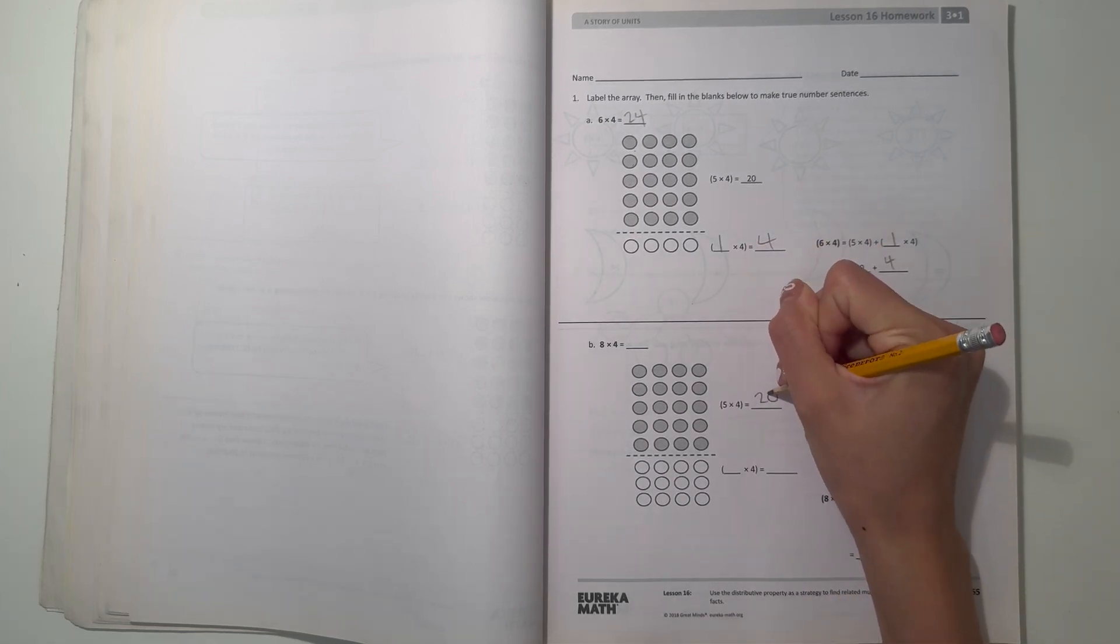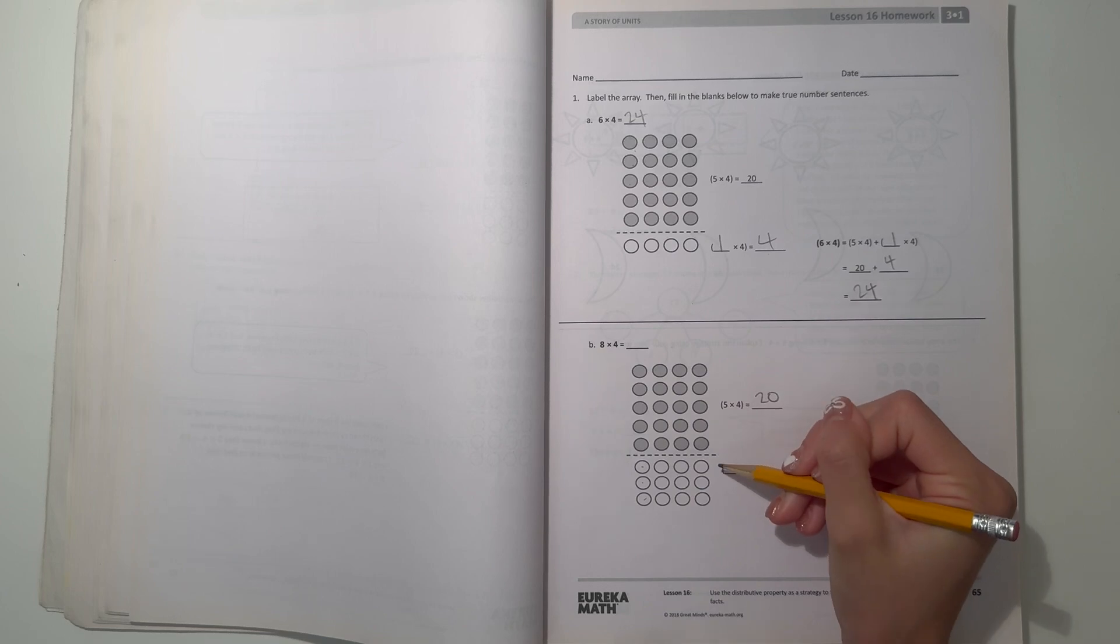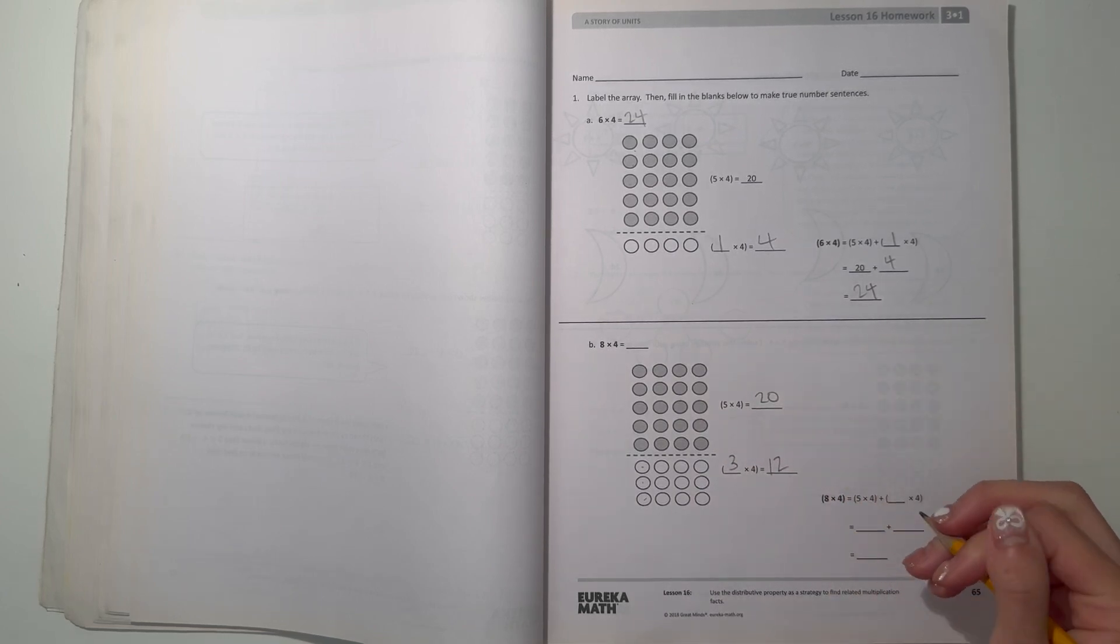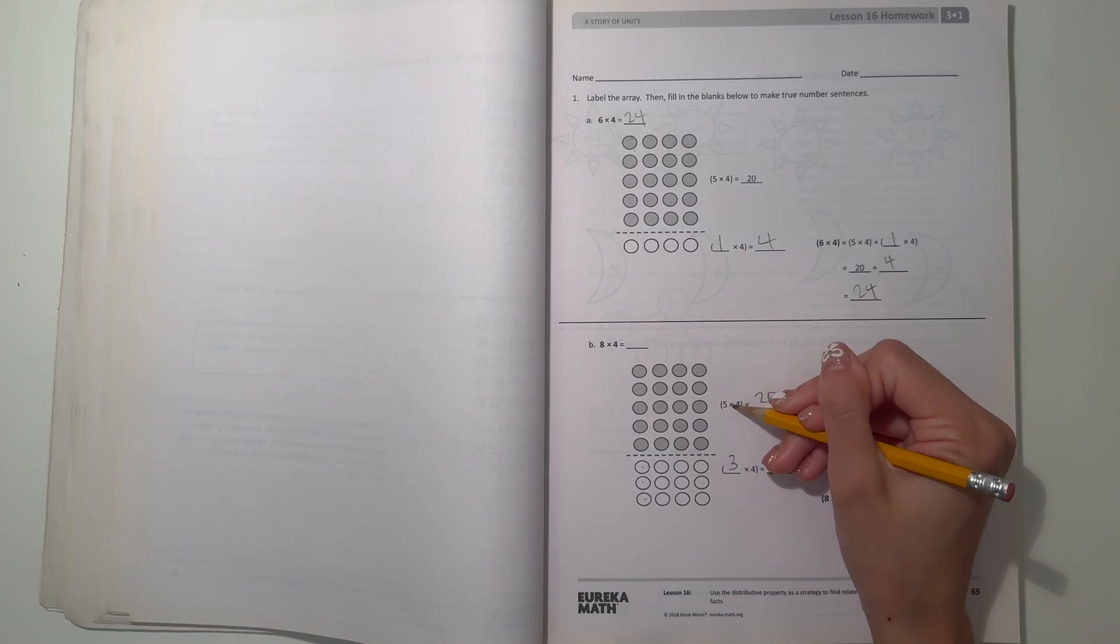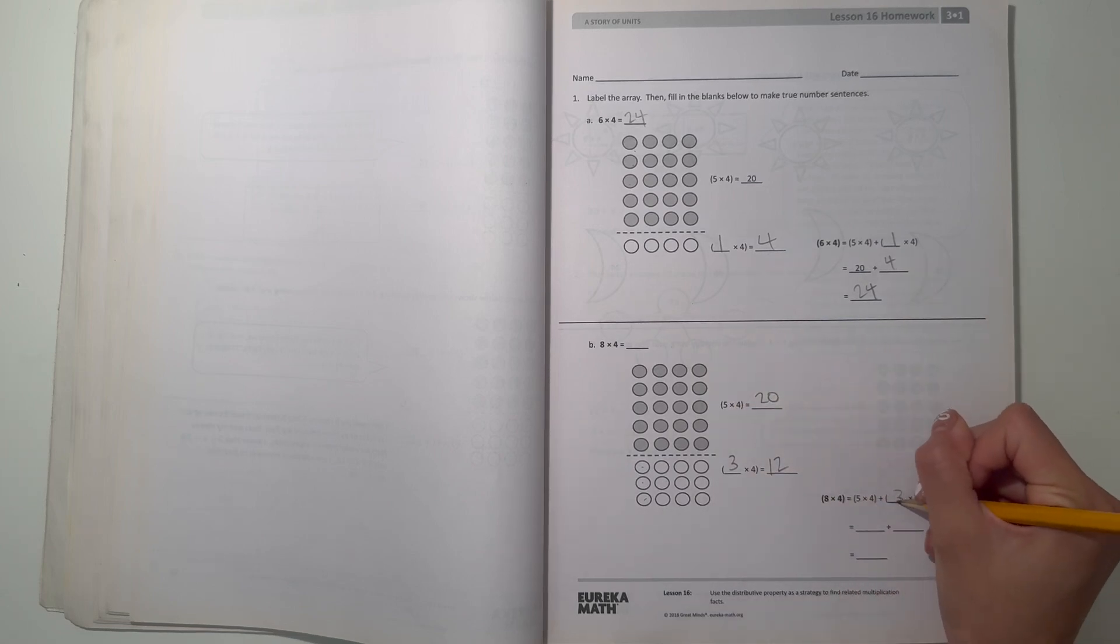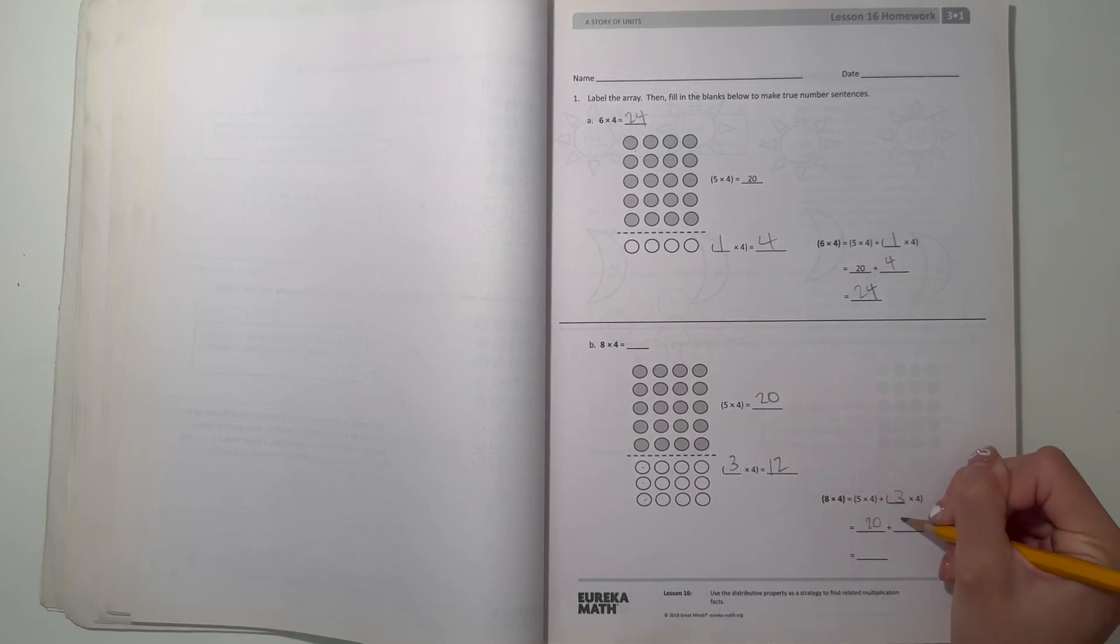Now part b: eight times four they separate into five times four which is twenty, and then we have three times four that gives us twelve. So eight times four equals five times four plus three times four, which is twenty plus twelve equals thirty two.